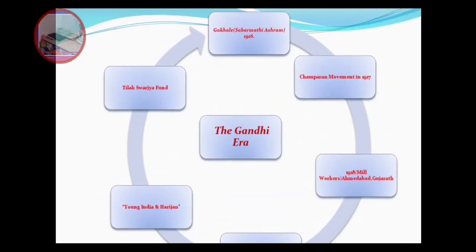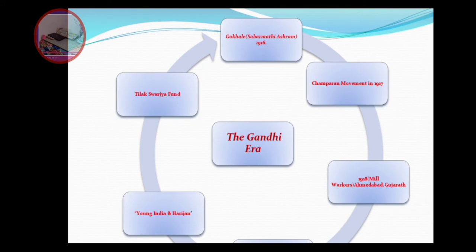In the Gandhian era, we look at the Sabarmati Ashram. In 1915-1916, the Sabarmati Ashram was established near Ahmedabad in Gujarat. This became the center for training for satyagraha. The ashram was close to the Sabarmati river, that's why it is called the Sabarmati Ashram. It is also known for the first satyagraha organized in favor of indigo farmers in Champaran district of Bihar.